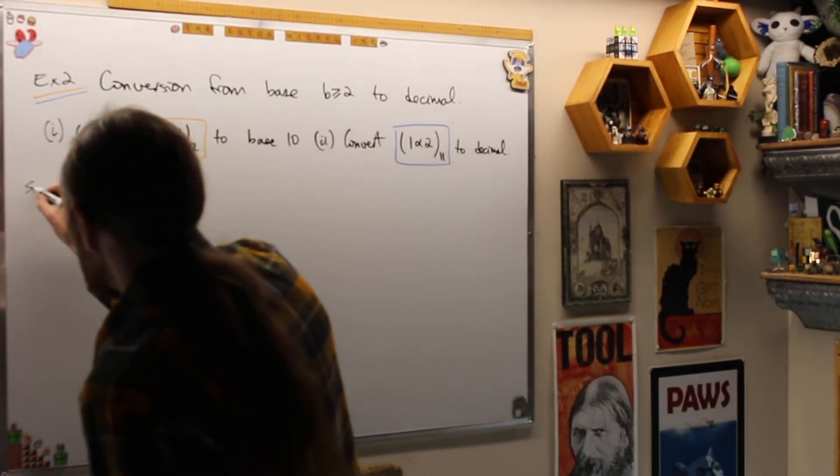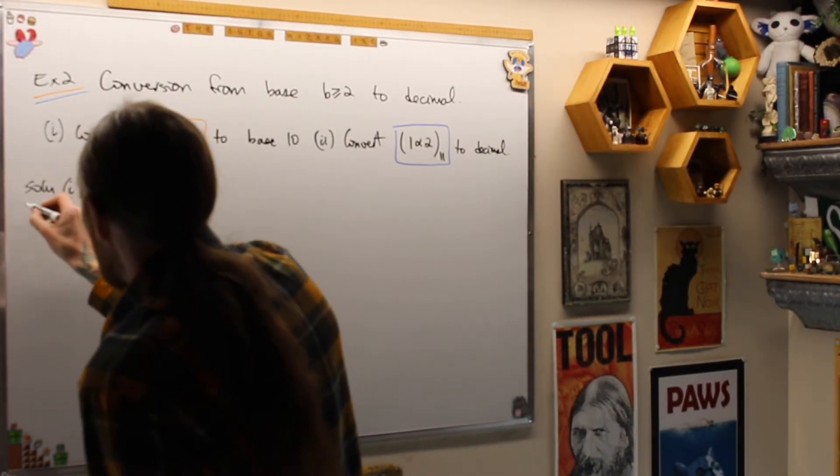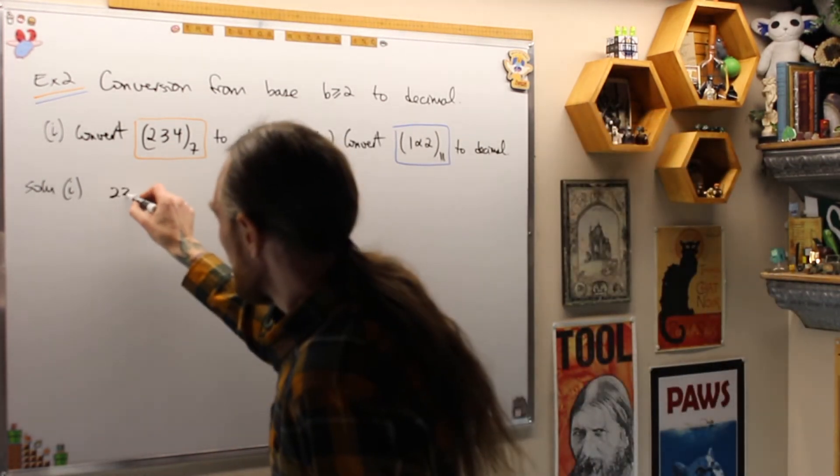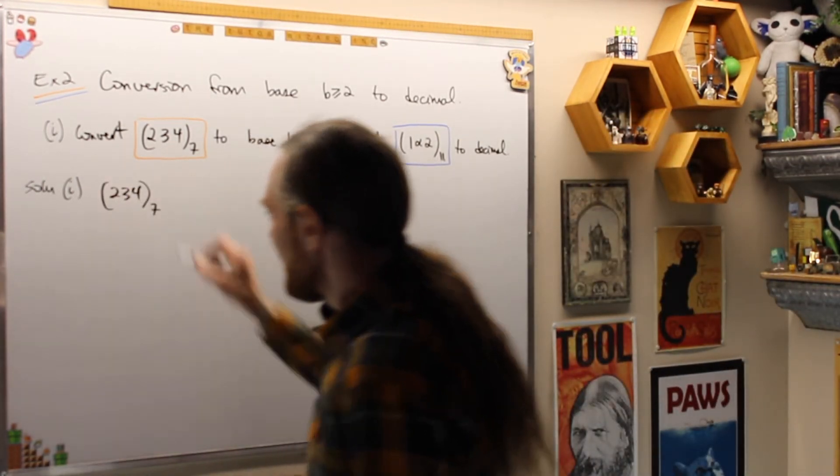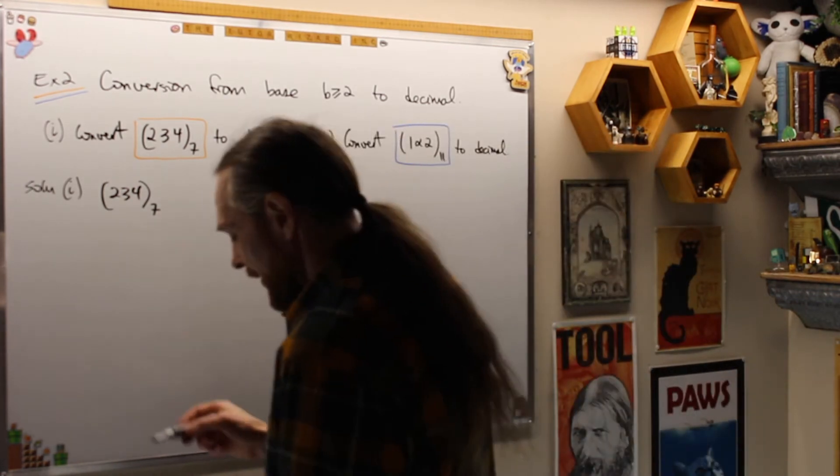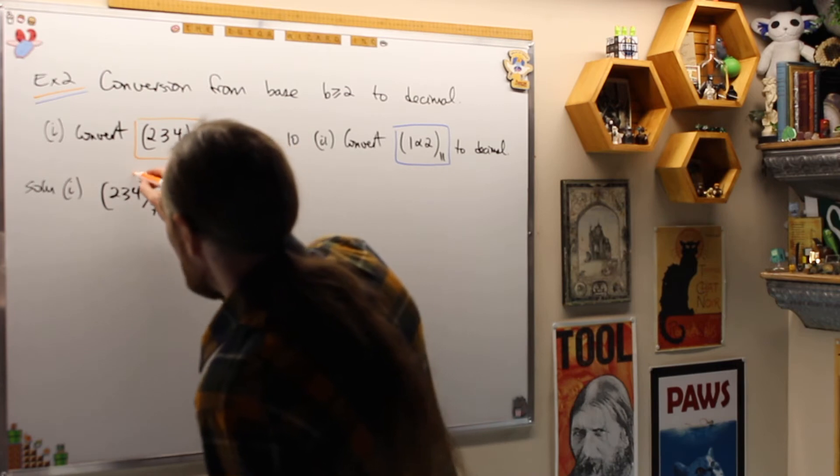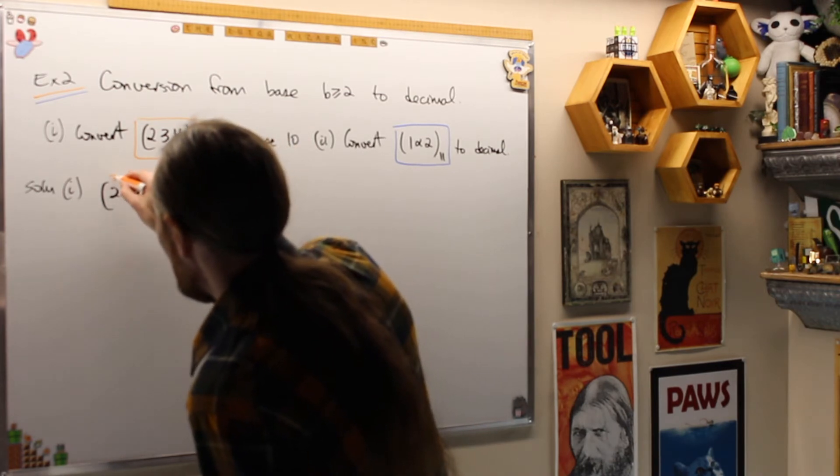Solution for part 1. What we're going to do is we have 234 base 7. What that's actually equal to is, I'm always going to use, this is going to be 7 to the 0, 7 to the 1, 7 squared. And what I'm going to get is therefore this string of symbols by definition base 7 is equal to 2 times 7 squared plus 3 times 7 to the 1 plus 4 times 7 to the power 0.